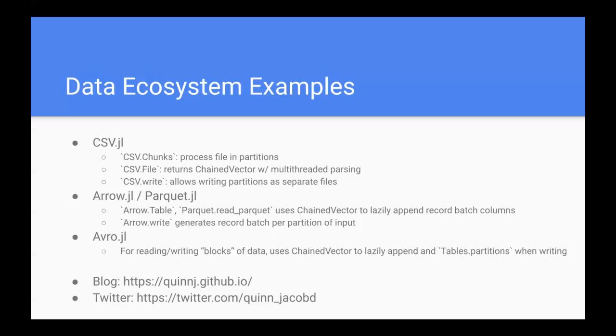Similarly with Arrow and Parquet and Avro, each of those data formats has kind of a natural partitioned kind of representation in their data format. And so we can use ChainVector to say hey, if there are multiple record batches or blocks or whatever it is in this data format, we're going to treat those as one big column without needing to reallocate data and copy things all over the place. We want to do this as efficiently as possible when we're reading data. And so ChainVector is the data structure that allows us to do that really efficiently.